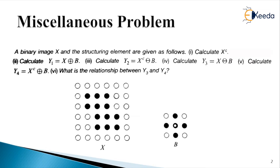The binary image capital X is represented on the left-hand side, whereas the structuring element is denoted by capital B on the right-hand side. In this problem statement, we have to find answers to six questions, which are the sub-questions of this miscellaneous problem.